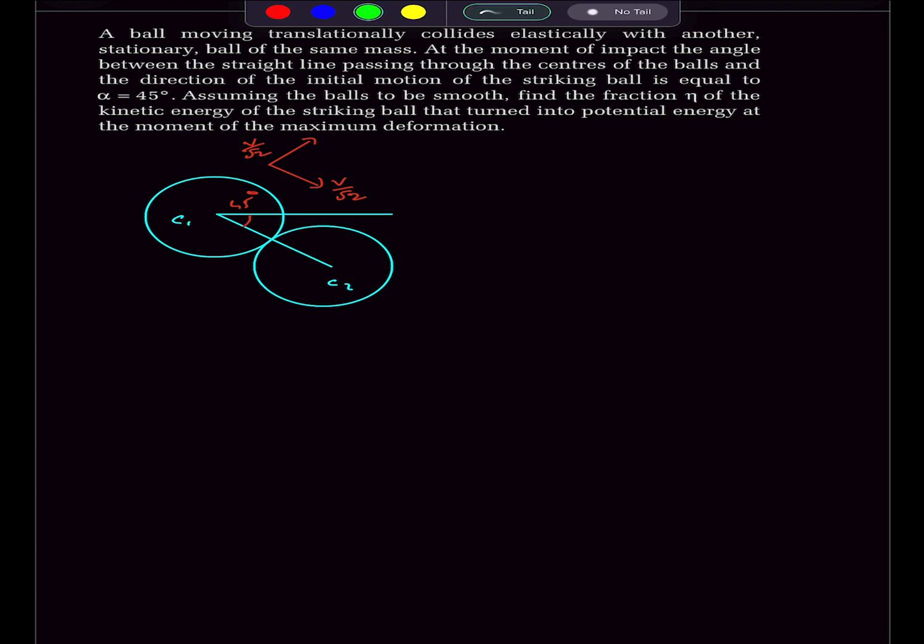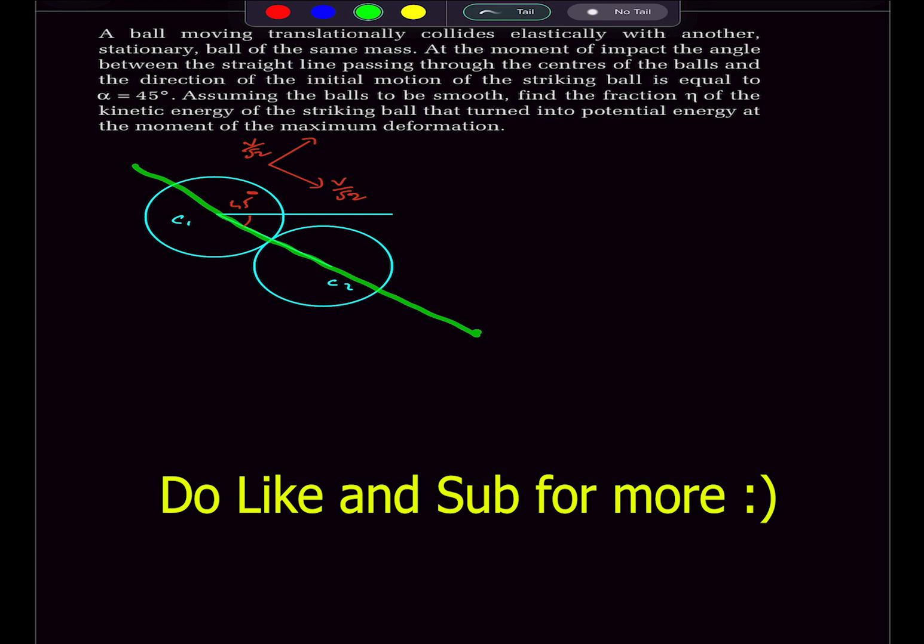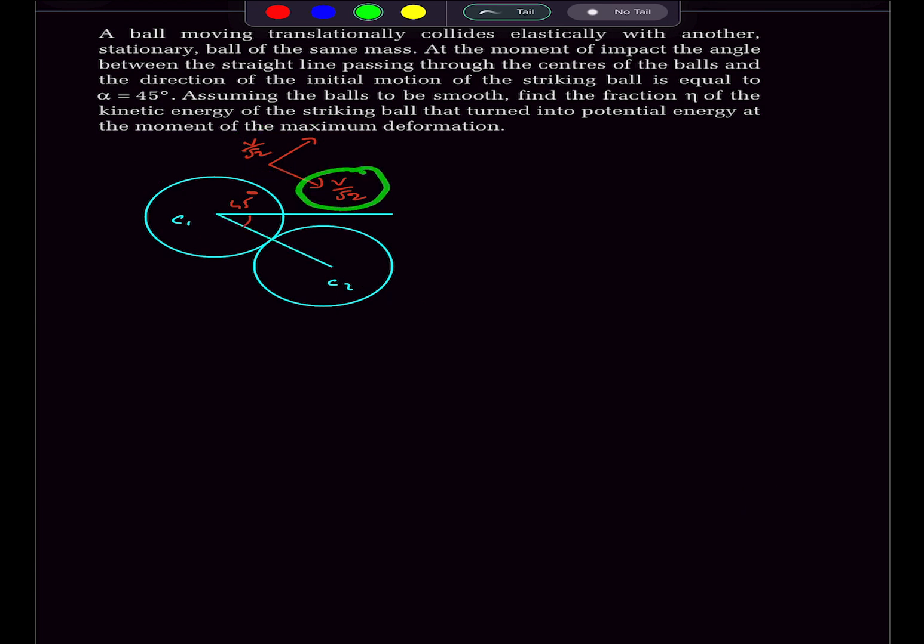So now as this is the direction of impact, there is no change in momentum of the bodies in the direction perpendicular to it, which means this V by root 2 won't change. Only thing that's going to change is this V by root 2 over here.